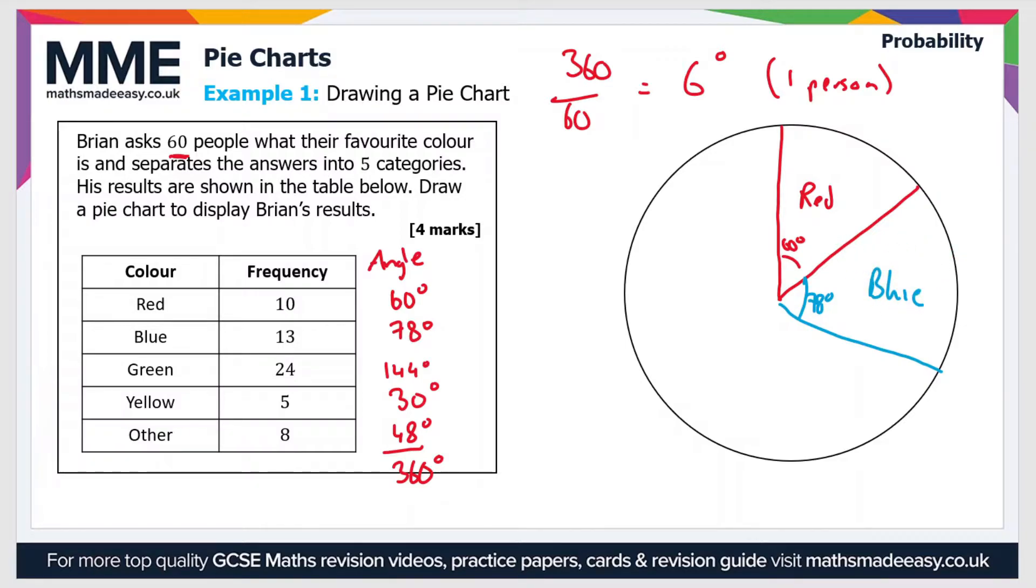And then for the next one, the green category, that's an angle of 144 degrees. That's quite a large angle so that should look something like this. So you don't have to label the angle but make sure you label each segment. So that's green.